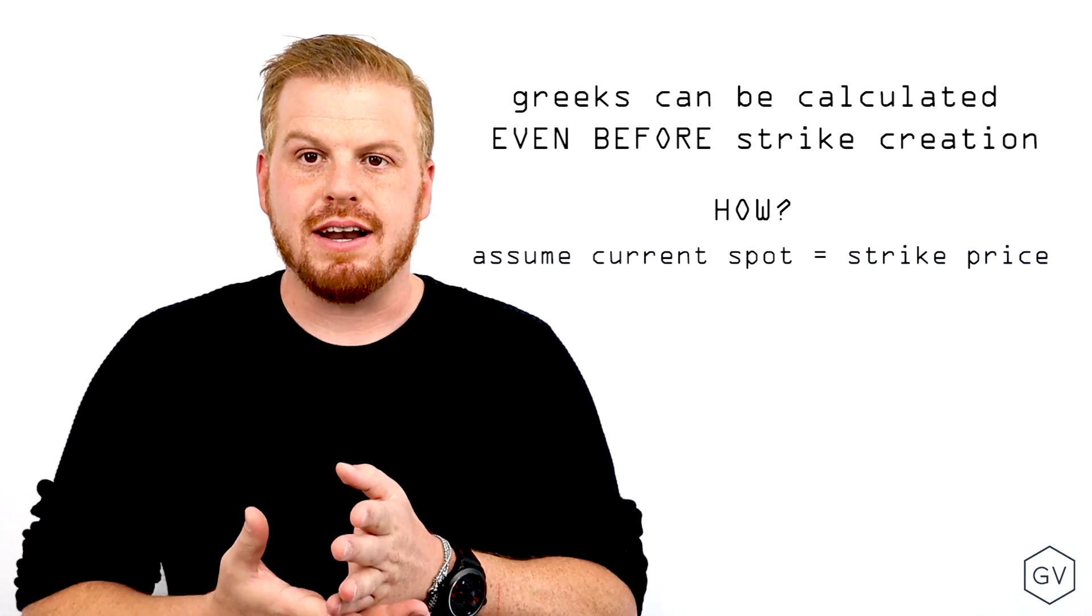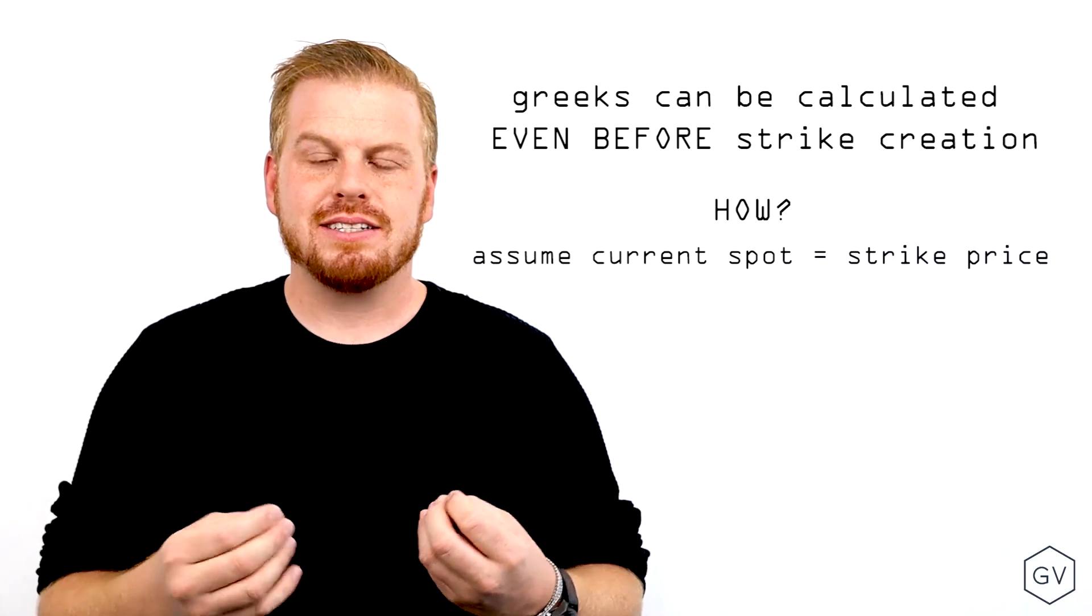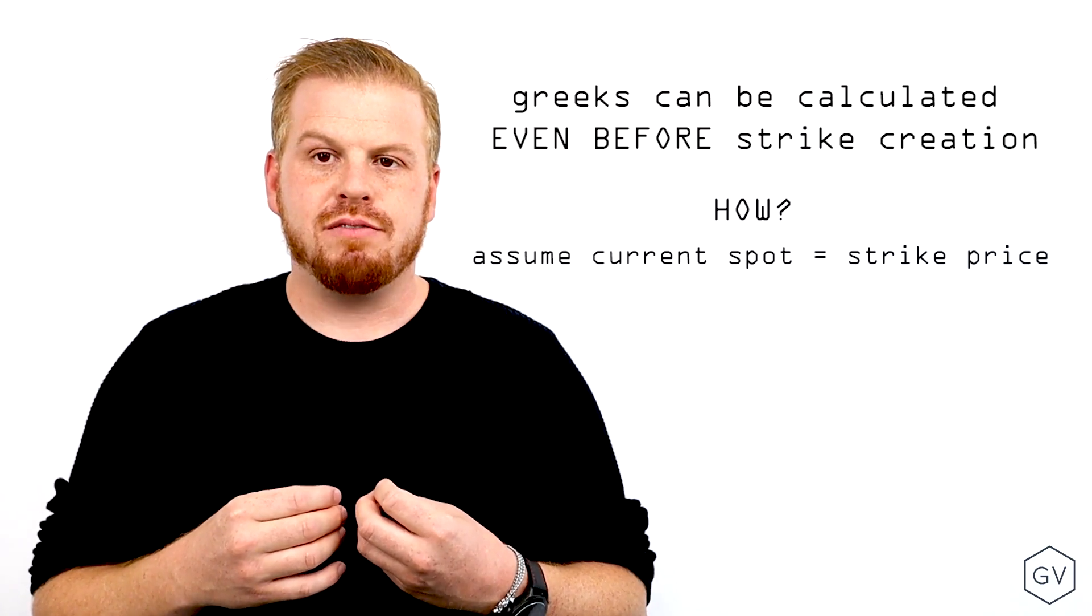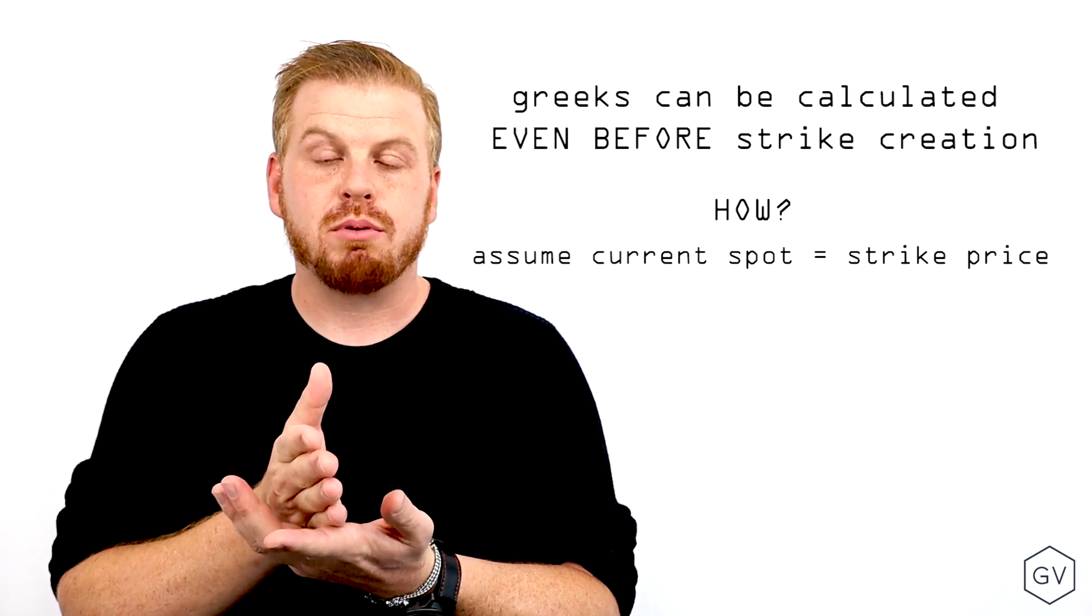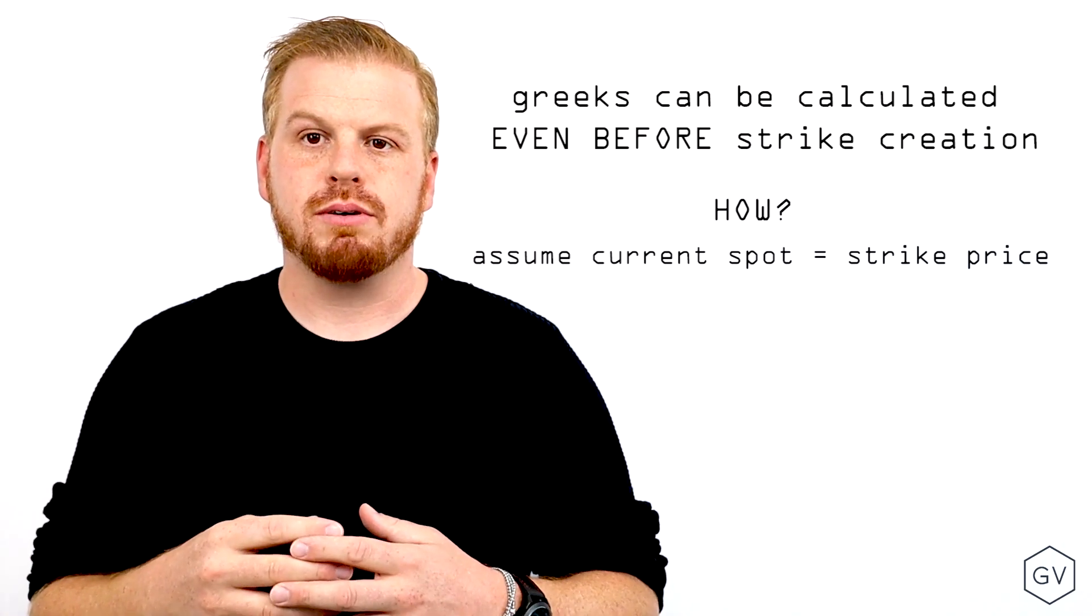So some of the basic assumptions that we assume is that we're calculating Greeks as if the strike price was spot price as of right now. So the quarterly contract, what is the Greek profile if we struck the spot price as a strike price today and assumed 90 days until expiration?